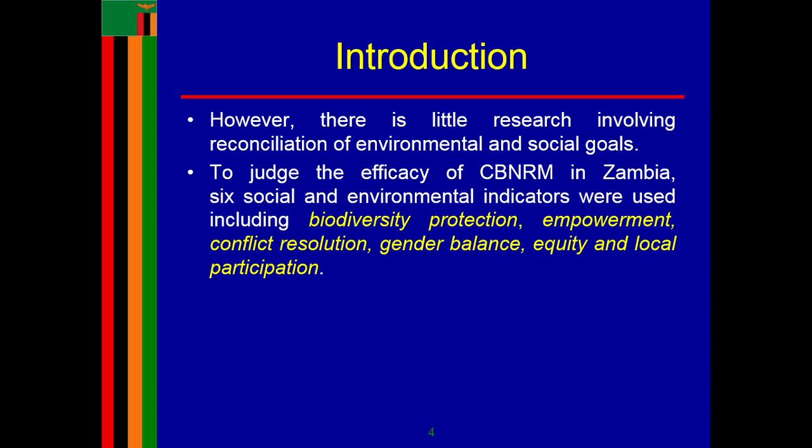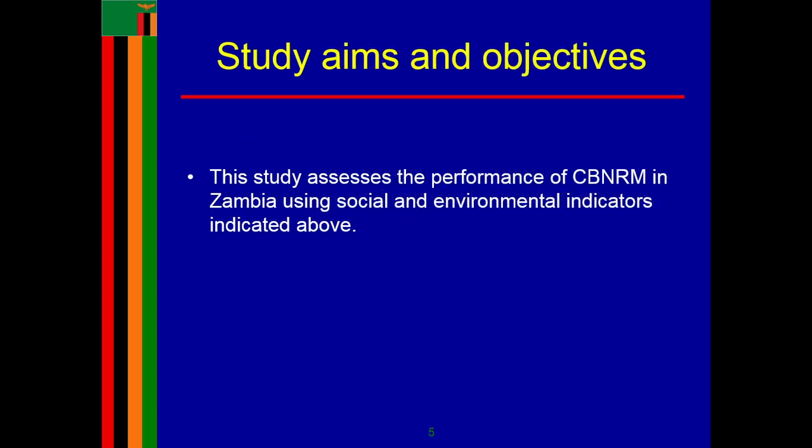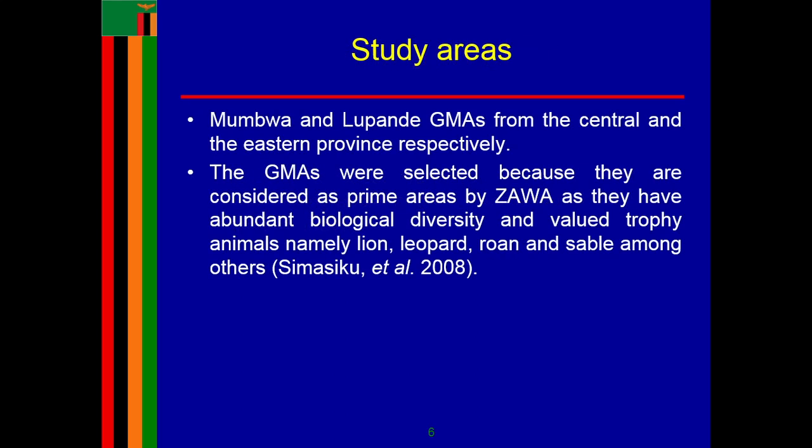To judge the efficacy of CBNRM in Zambia, six social and environmental indicators were used. These included biodiversity protection, empowerment, conflict resolution, gender balancing, equity, and local participation. The aim of the study was to assess the performance of CBNRM in Zambia using these social and environmental indicators.